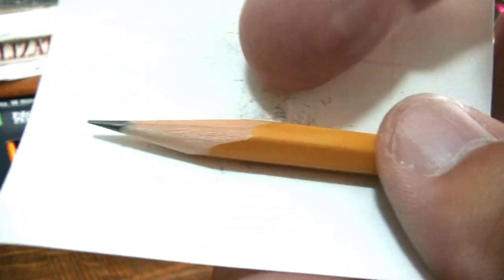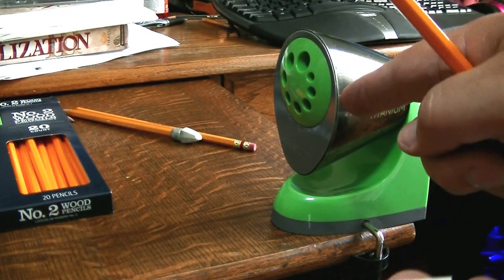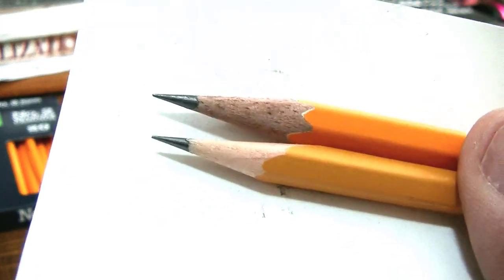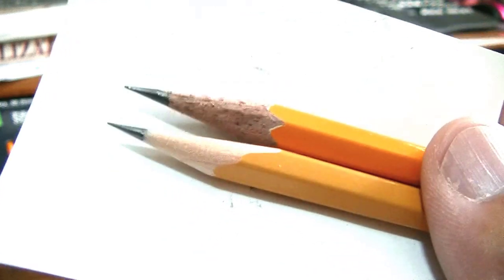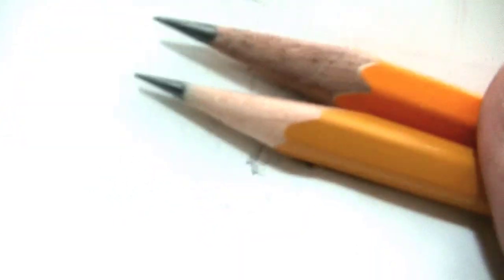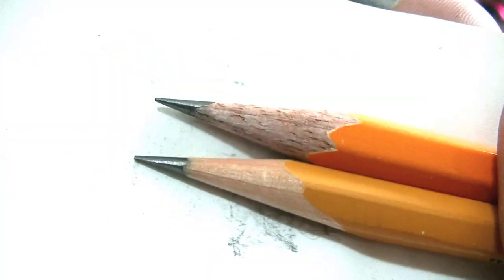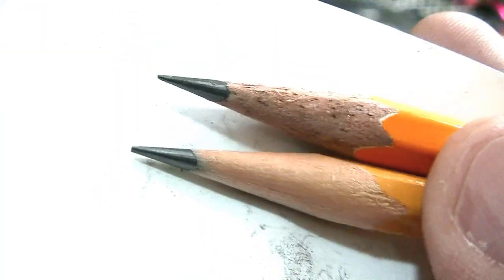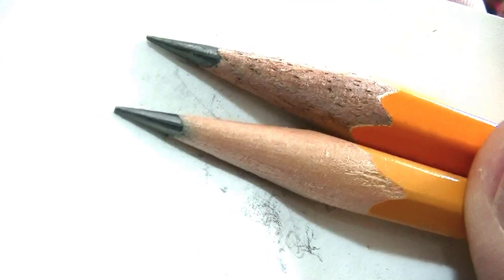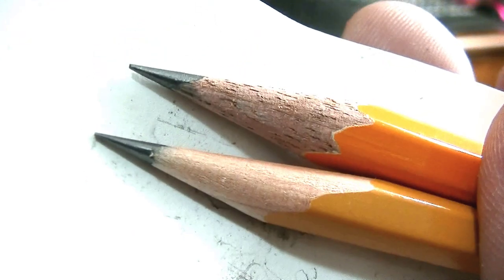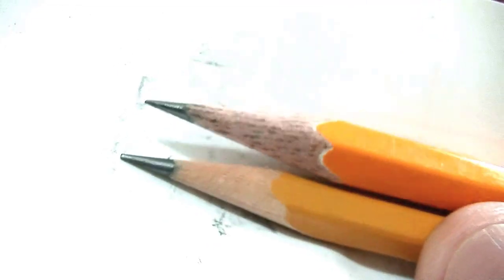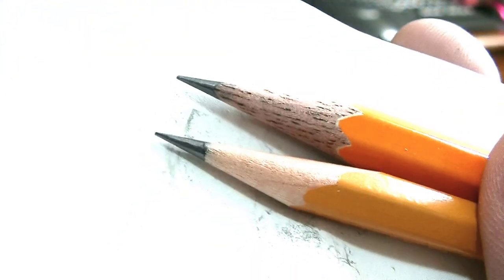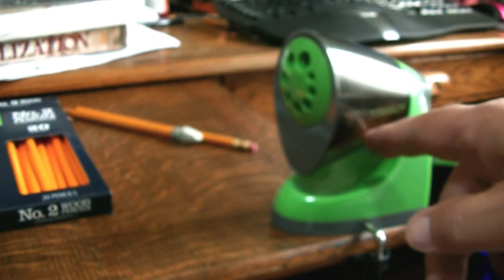And now to compare, this one here is the manual sharpener right here, and then this one right here is the one that was on the electric. So you can compare right there. They're pretty comparable - you can get the same kind of point pretty much from either one.